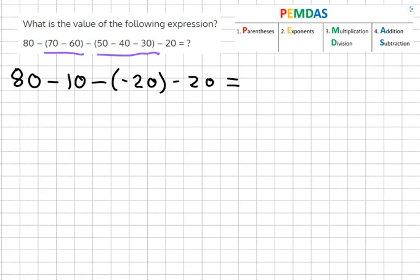So from now we're going to open up the parentheses. So the equation becomes 80 minus 10 minus minus 20, and two minuses create a plus. So it becomes plus 20 minus 20.